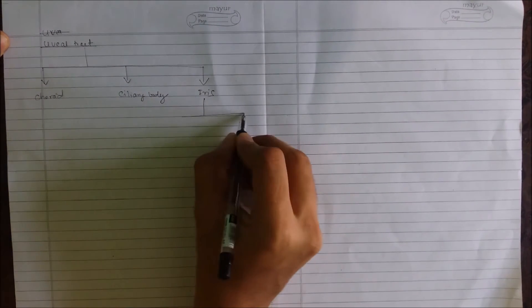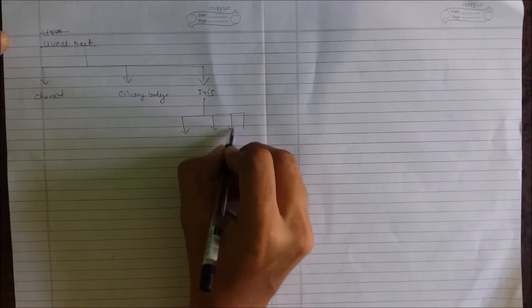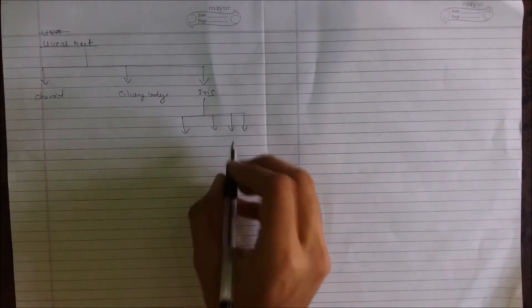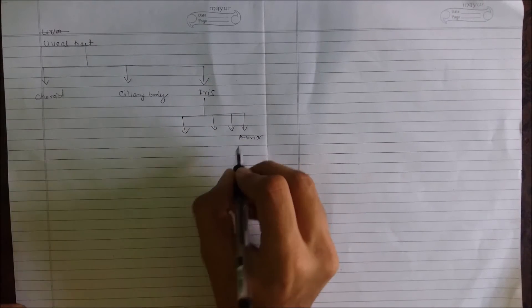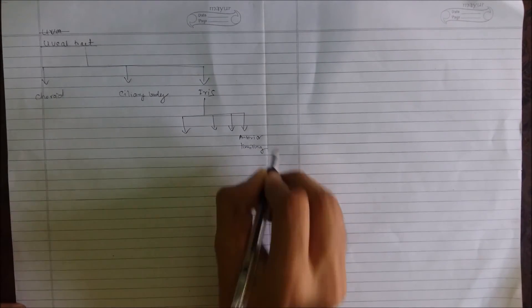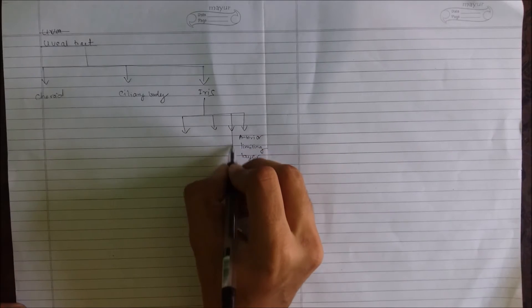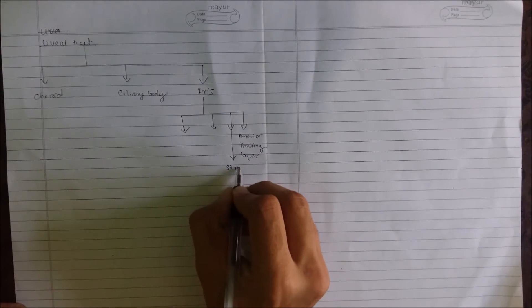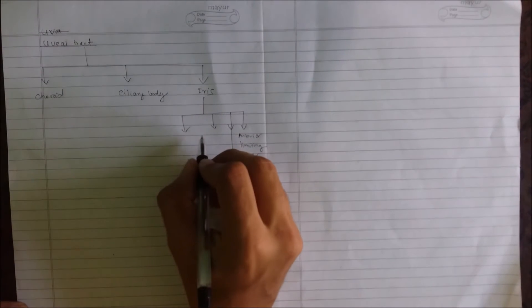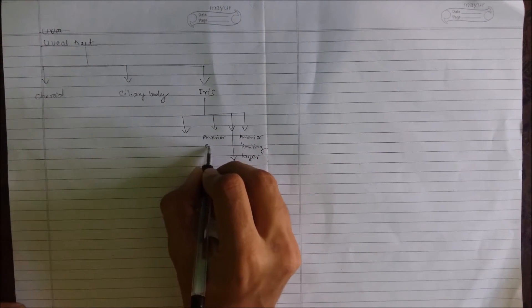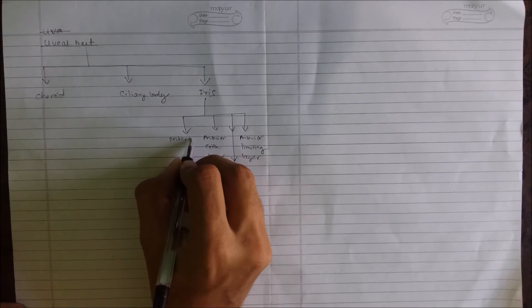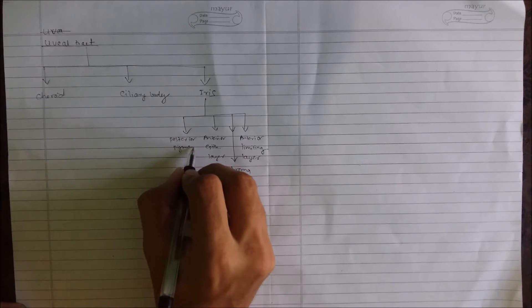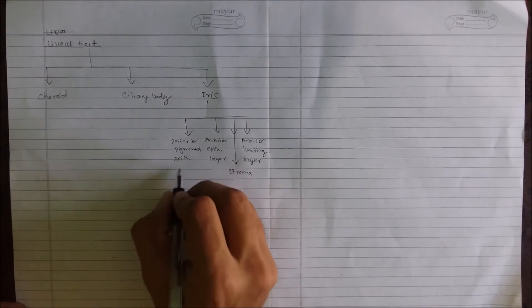Now let me name the different parts of the iris. The iris is divided microscopically into four parts. The first, the outermost layer, is the anterior limiting layer; the second one is stroma; the third one is the anterior epithelial layer; and the fourth one is the posterior pigmented epithelial layer.